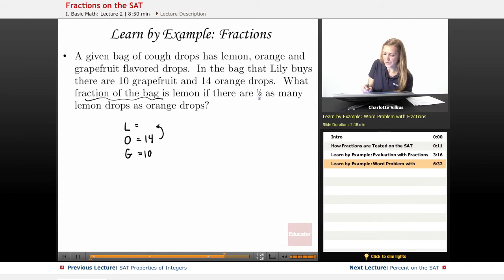And I know that there are one half as many lemon drops as orange drops. So if orange is 14, then there should be half as many that are lemon. So 7 because 14 times one half is going to give me 14 over 2. And I can take the 2 out of both and end up with 7 over 1.